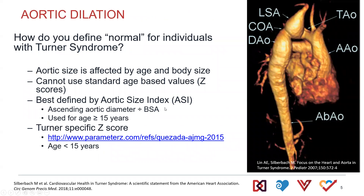Over time, the thing we follow most closely is the dilation of the aorta. This is most typically the ascending aorta, which differs from those with other connective tissue diseases where it's often the aortic root. It can be anywhere along the aortic arch, including the transverse and descending aorta, as well as the head and neck vessels.